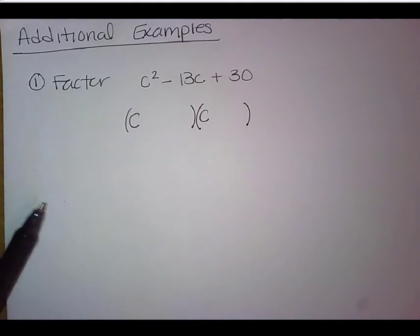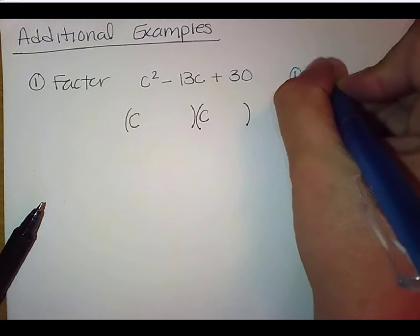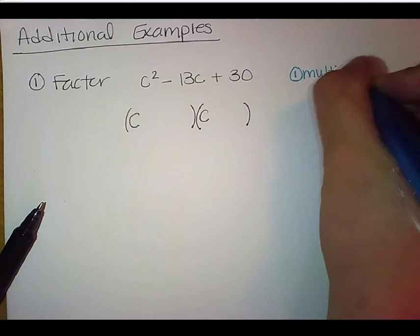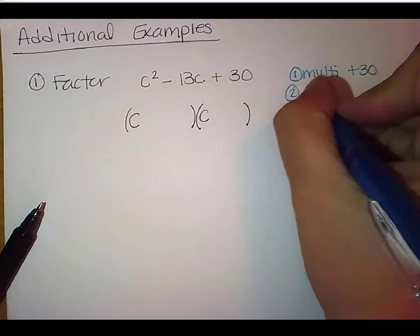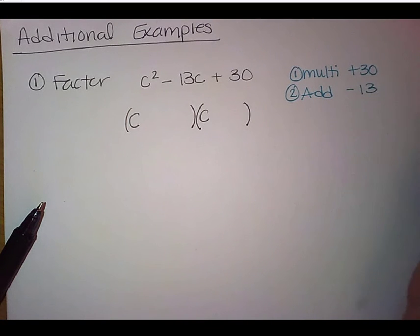And now remember that we're wanting two things to happen. We want to find a number that multiplies to a positive 30 and then in addition to that, add to a negative 13. Now, if you'll remember in our last video, we talked about the way that the signs work together and because this guy is positive, that means that my signs are going to be the same, either both positive or both negative. But then when I look at this guy, because he is negative, that means that both of my signs are going to be negative.